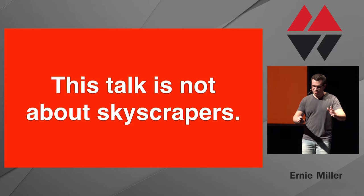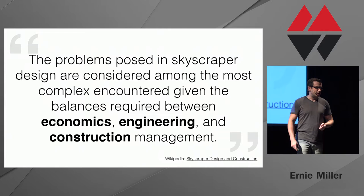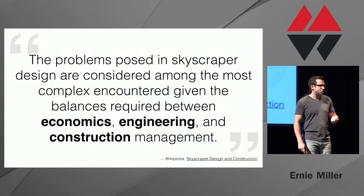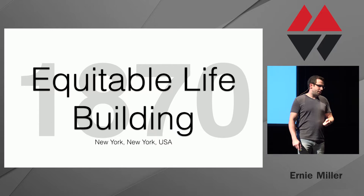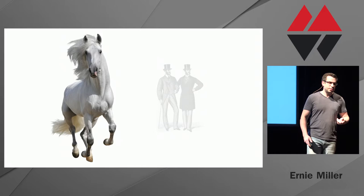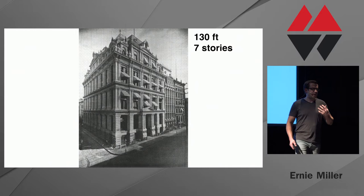I do find this interesting. As I started to do the research for this talk, I stumbled on this — Wikipedia is where you start research for all talks, after all. The problems posed in skyscraper design are apparently among the most complex encountered, because you have to balance things like economics, engineering, and construction management. The first skyscraper we're going to talk about is the Equitable Life Building, which technically doesn't even qualify as a skyscraper. But to be fair, the word skyscraper was once a term used for a very tall horse, very tall men, or even very tall hats, so I think we can give a seven-story, 130-foot-tall building a pass.